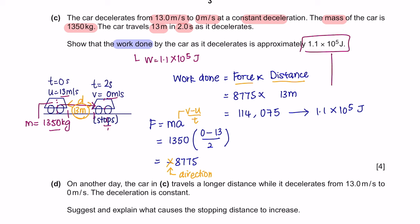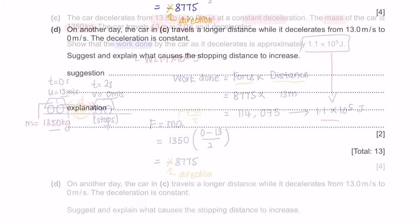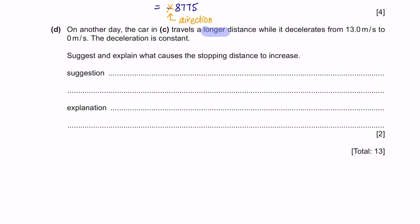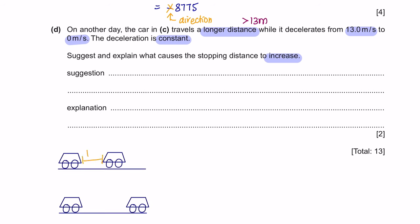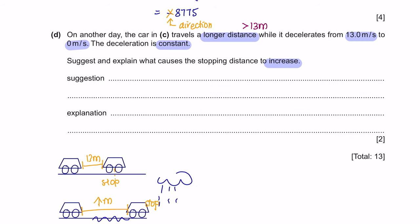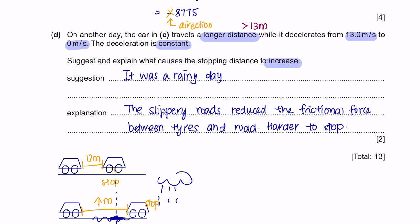So you have shown that the work done is indeed 1.1×10⁵ joules. On another day, the car travels a longer distance while decelerating from 13 m/s to 0 at constant deceleration. Suggest and explain what causes the stopping distance to increase. A possible reason is it was a rainy day, so the roads were slippery, reducing the frictional force between the tyres and road, making it harder to stop.